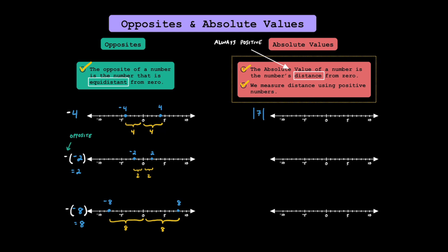When you see a problem like this, you should read it as: what's the absolute value of 7, or how far is 7 from 0? Looking at the number line here, 7 is going to be over here to the right. Seeing that 7 is 7 units away from 0, we can say that the absolute value of 7 is just equal to 7. What about the absolute value of negative 3? Plotting negative 3 on our number line, it's going to be over here to the left of 0. Since it's 3 units away from 0, the absolute value of negative 3 is just going to be positive 3.